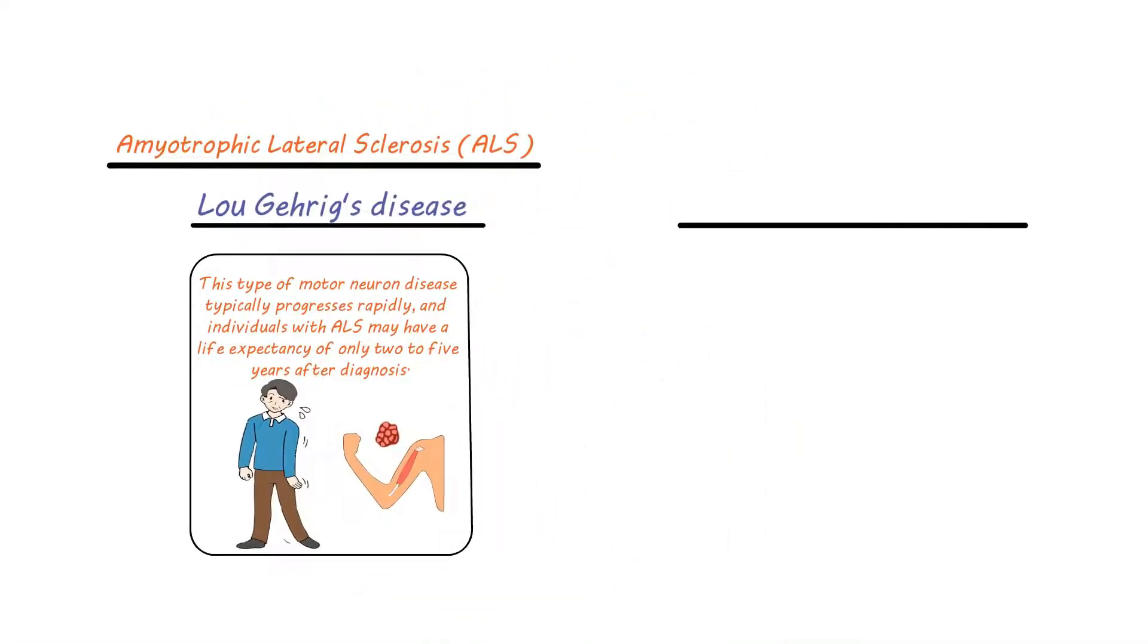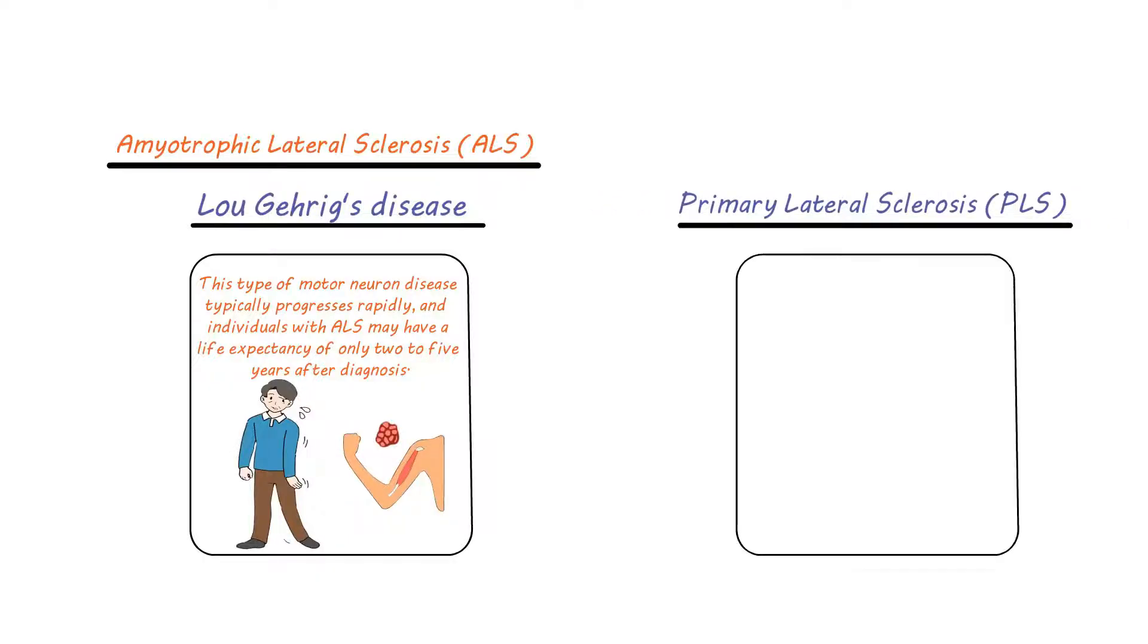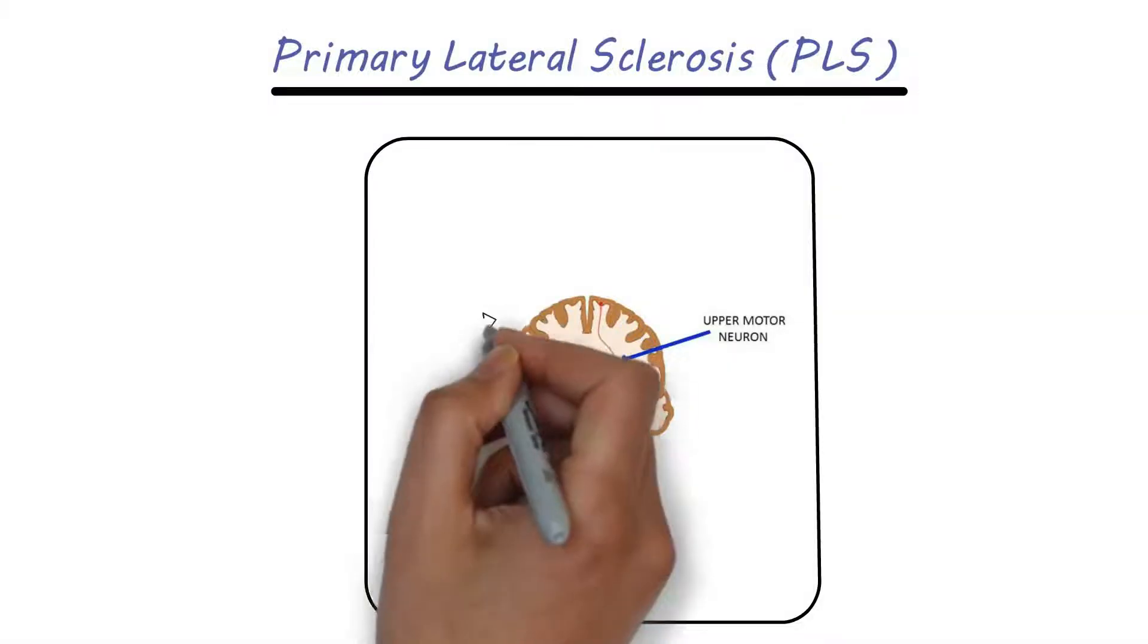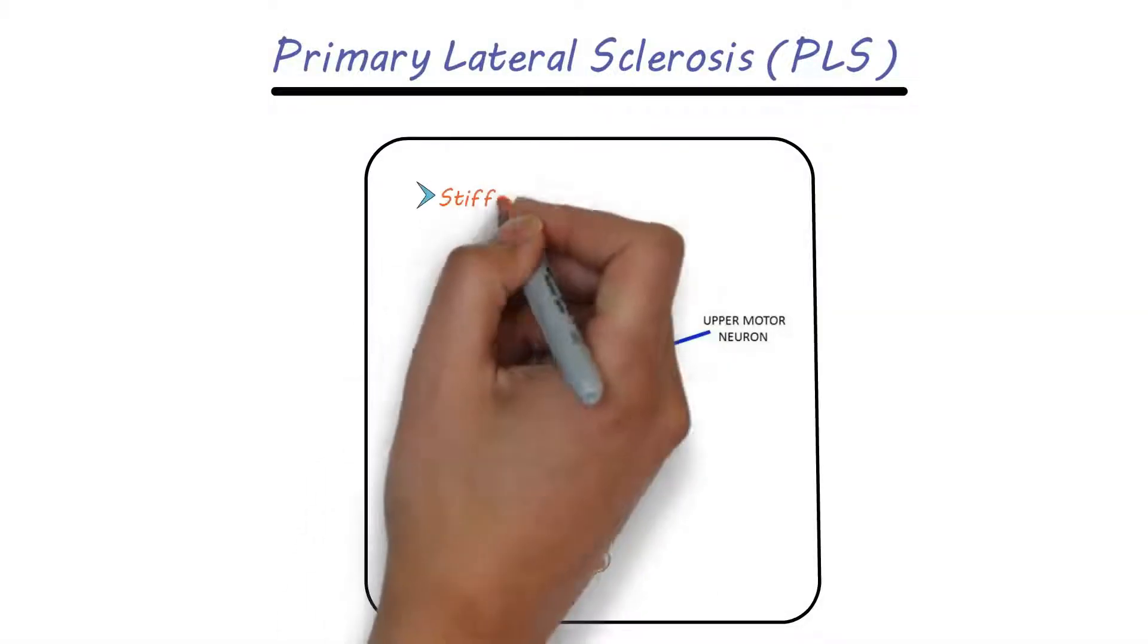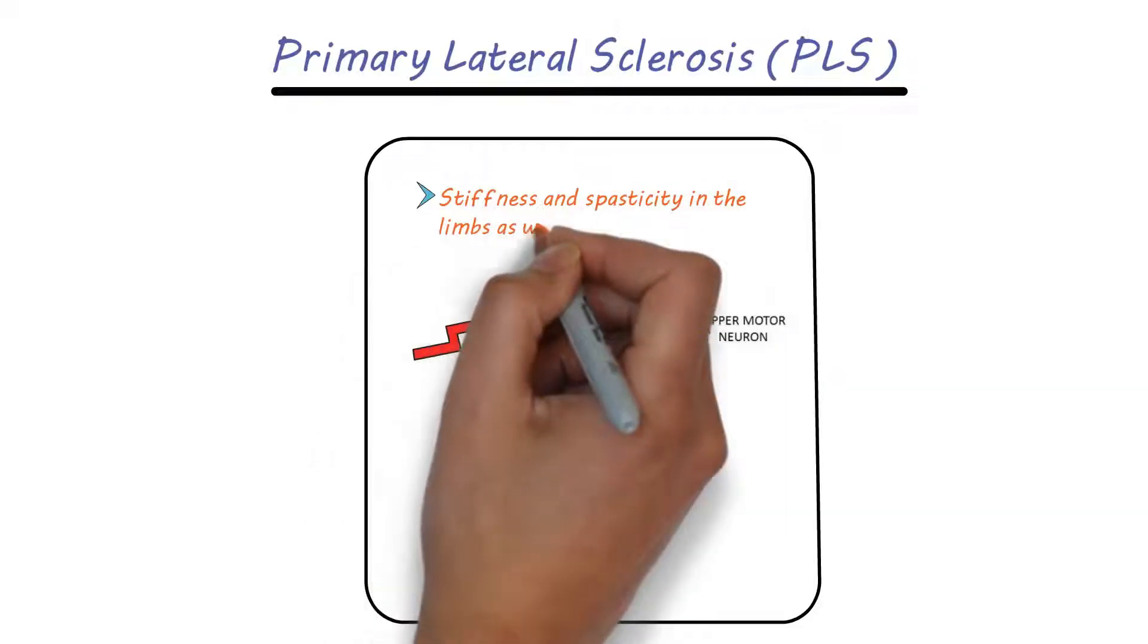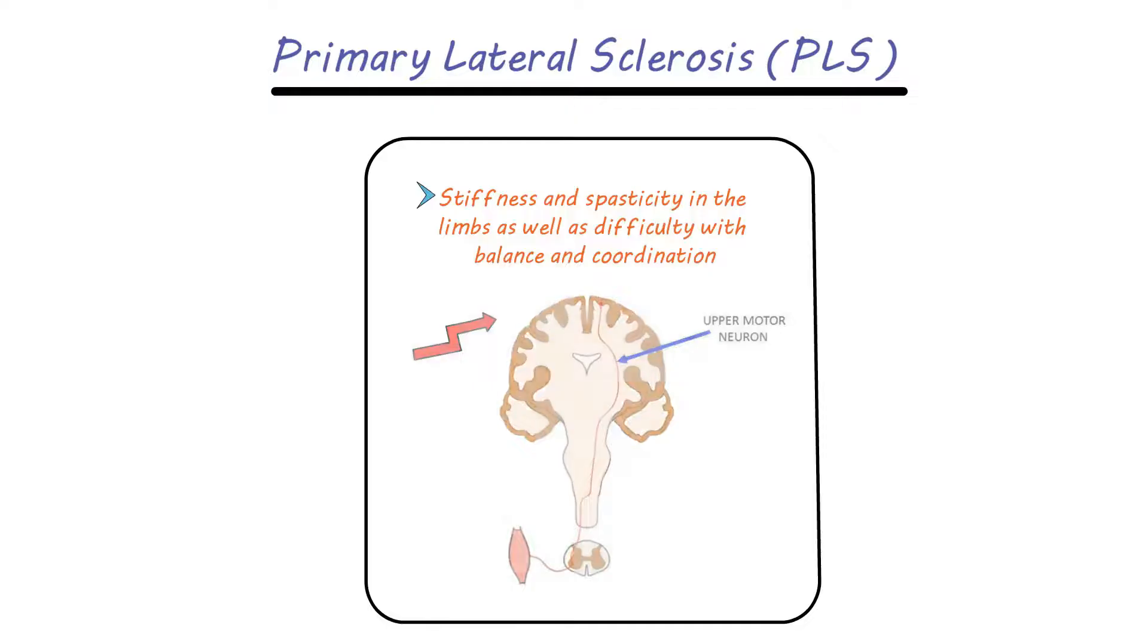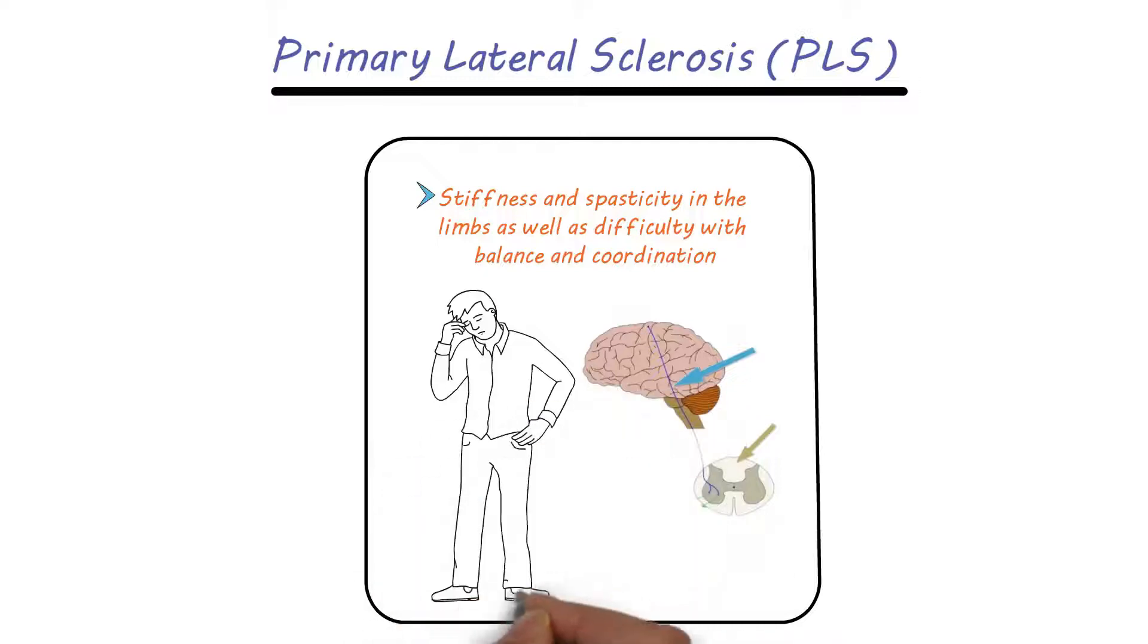Another type of motor neuron disease is primary lateral sclerosis, PLS, which primarily affects the upper motor neurons in the brain. PLS progresses more slowly than ALS and may cause stiffness and spasticity in the limbs, as well as difficulty with balance and coordination. While PLS is a rare form of motor neuron disease, it can still significantly impact an individual's quality of life.